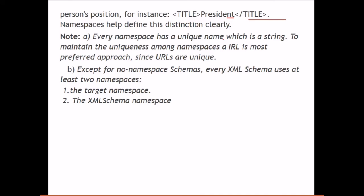Every namespace has a unique name, which is a string — two namespaces cannot share the same name. To maintain uniqueness among namespaces, a URL is the most preferred approach since URLs are unique. Every XML schema uses at least two namespaces: the target namespace and the XML schema namespace.